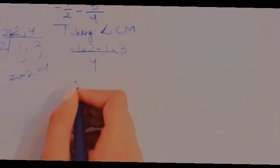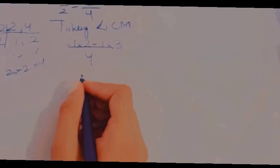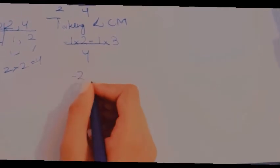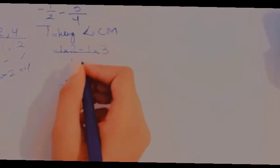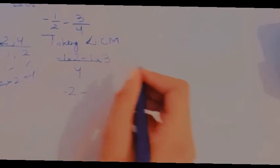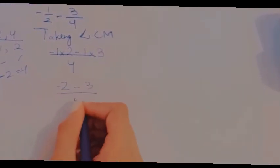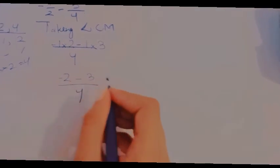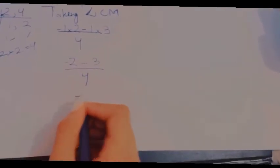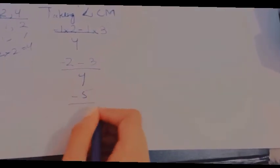Now just simple multiply it. Minus 1 multiply 2. 1, 2s are 2. So we're gonna put minus 2. Then minus 1, 3s are 3. So we're gonna put 3 by 4. Then minus 2 minus 3, minus and minus plus. So it comes minus 5 by 4.